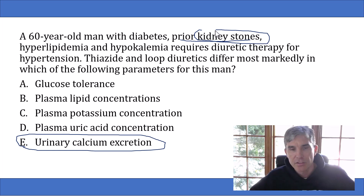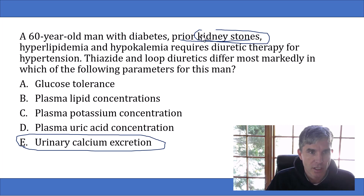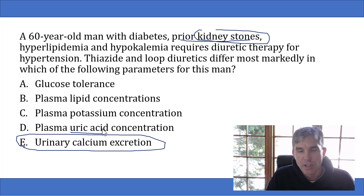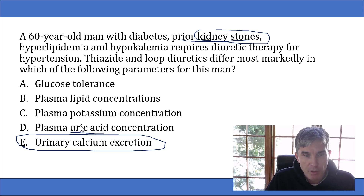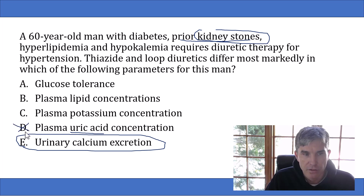Now let's look at the wrong answer choices. Answer choice D is plasma uric acid concentration. You should know that all diuretics — both loop and thiazide — increase serum uric acid concentration and can precipitate gout. So diuretics are bad for patients who have gout, because they both raise the plasma uric acid concentration equally. This does not represent a difference between the two drug classes.